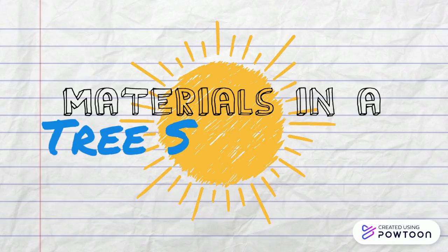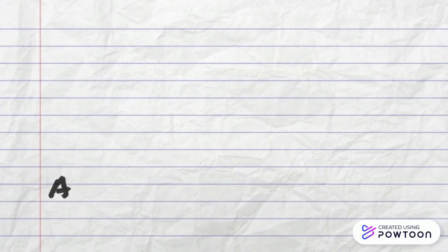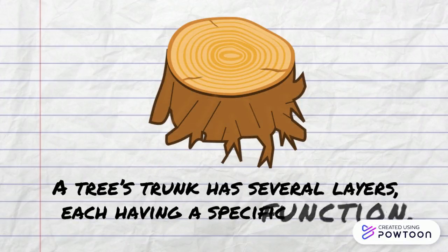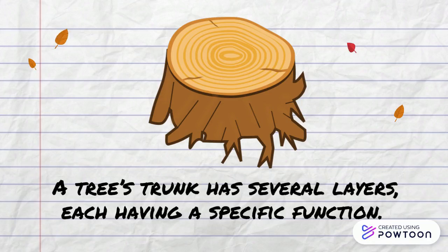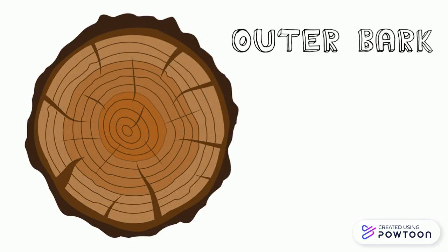In this video, we will be talking about materials in a tree structure. A tree's trunk has several layers, each having a specific function. The first structure of a tree's trunk I would like to point out is the outer bark of the tree. The outer bark is the outermost layer which protects the inside. It is mostly dead tissue.